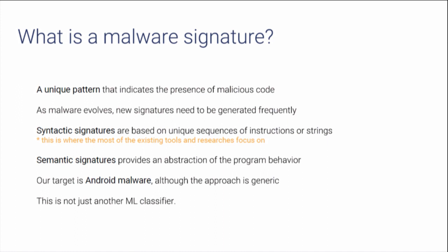What is a malware signature? A malware signature is a unique pattern that indicates the presence of malicious code. Since malware evolves over time, new signatures should be generated very frequently. Historically, there are two types of signatures: syntactic signatures and semantic signatures. Syntactic signatures are those based on textual strings and binary sequences extracted from the application, and this is the industrial standard type of signatures, where most of the existing research focuses.